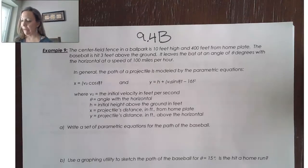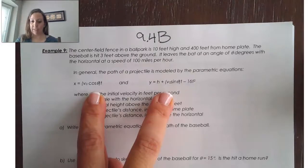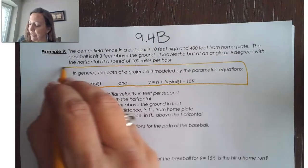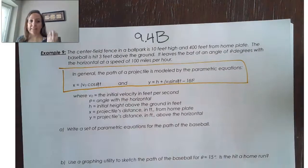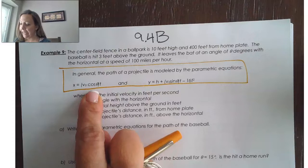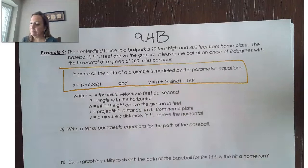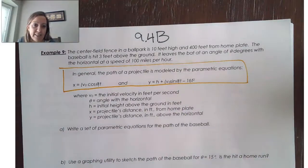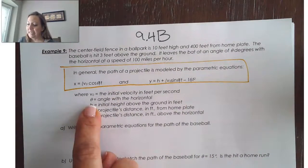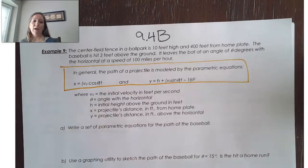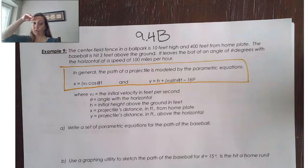So, in general, we're going to use these equations to model the path of a projectile motion. X equals V sub 0 times cosine theta times T, and Y equals H plus V sub 0 sine theta times T minus 16 T squared. V sub 0 is the initial velocity, theta will be the angle with the horizontal, H is the initial height above the ground, X is the distance in feet from home plate, and Y is the distance above the horizontal.